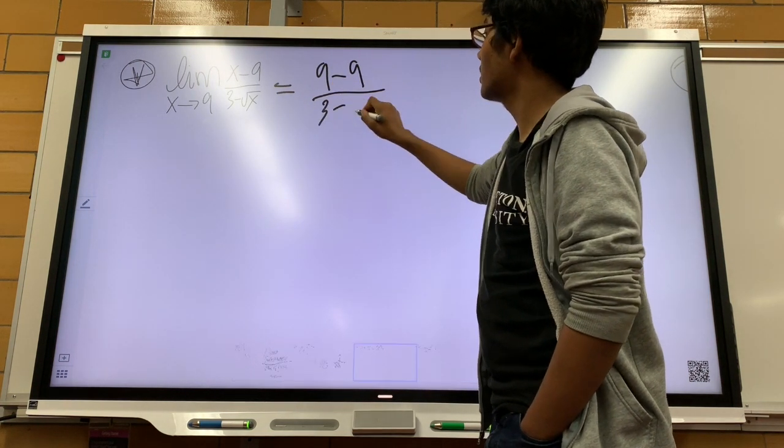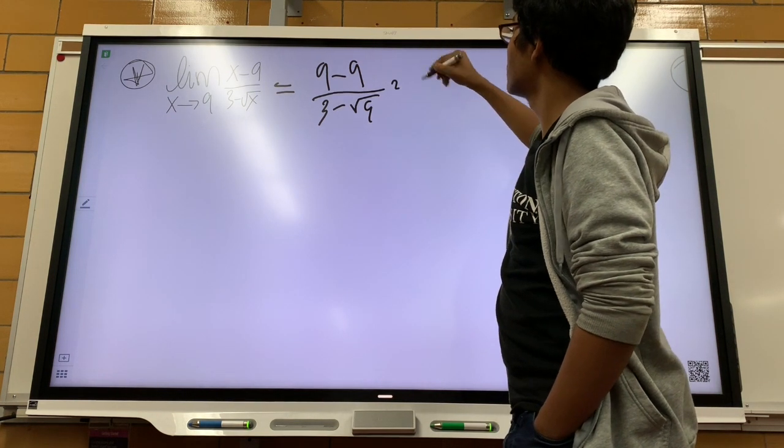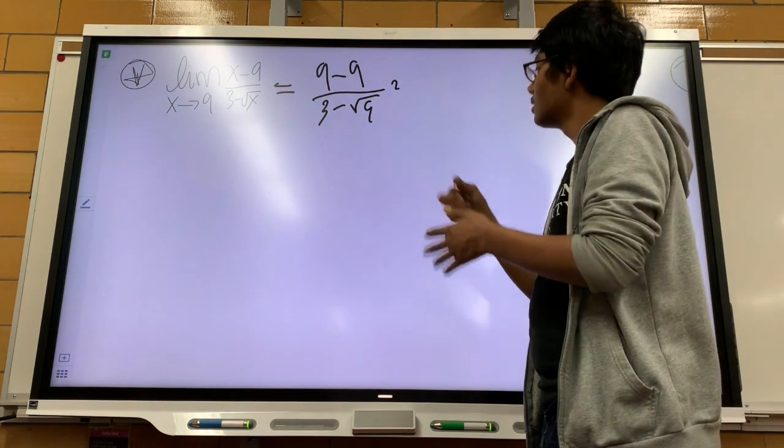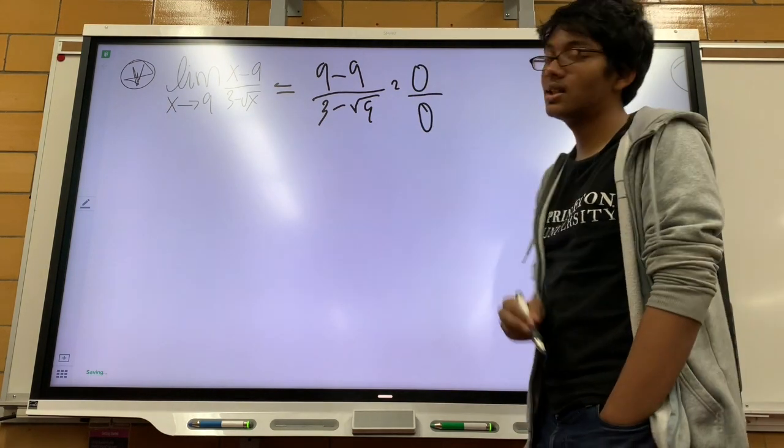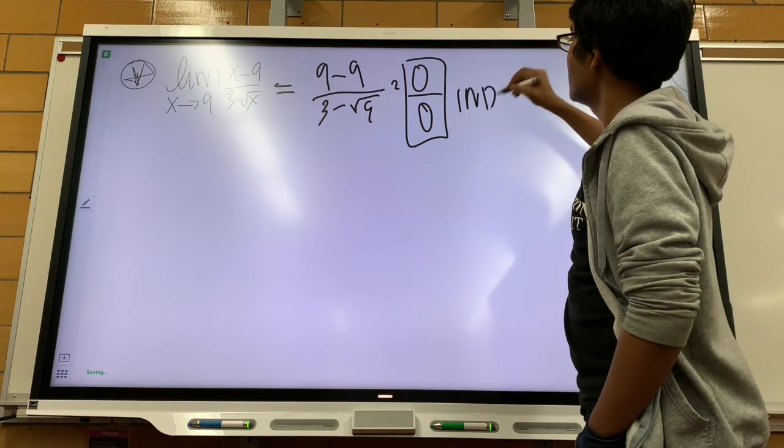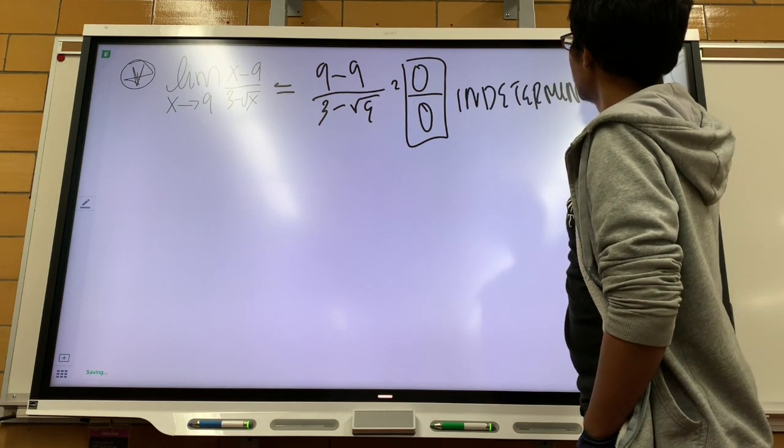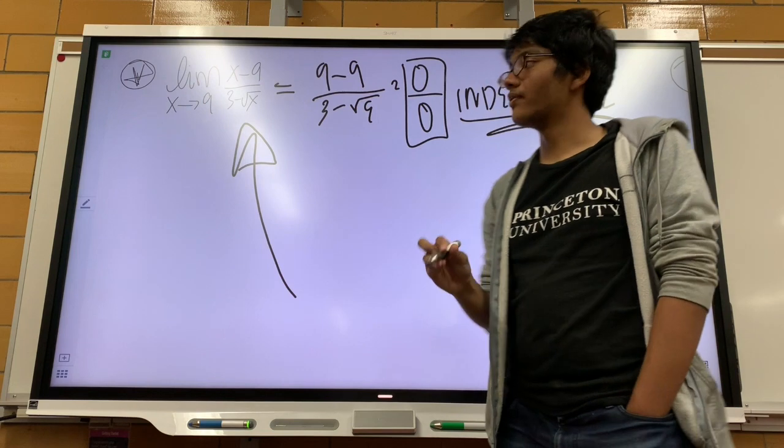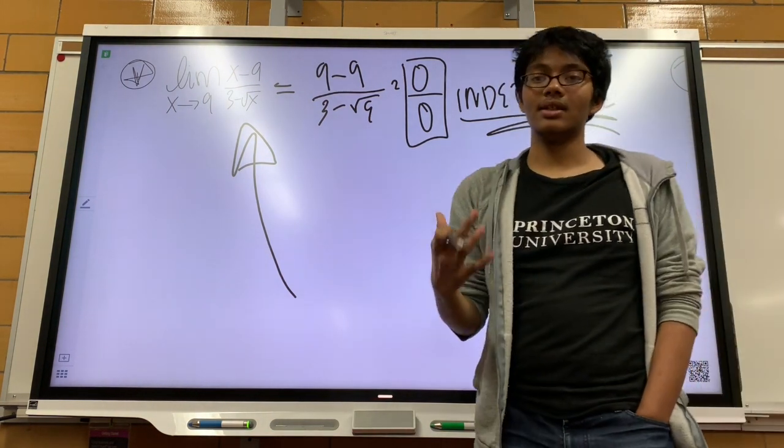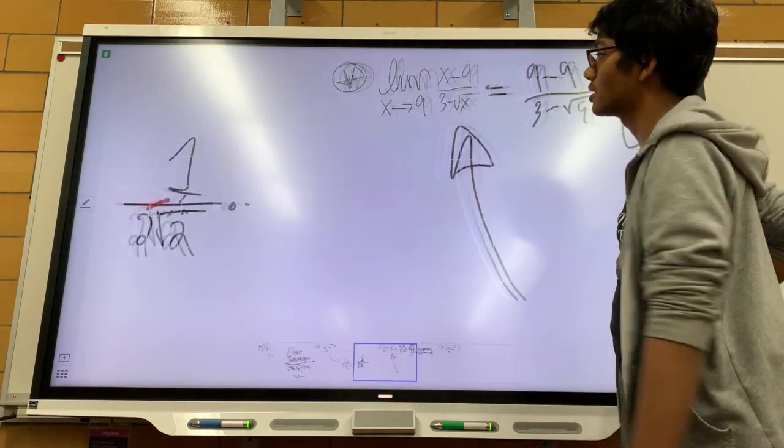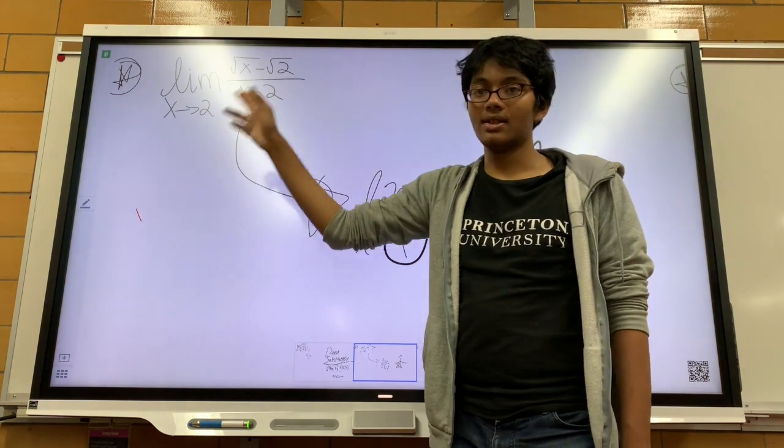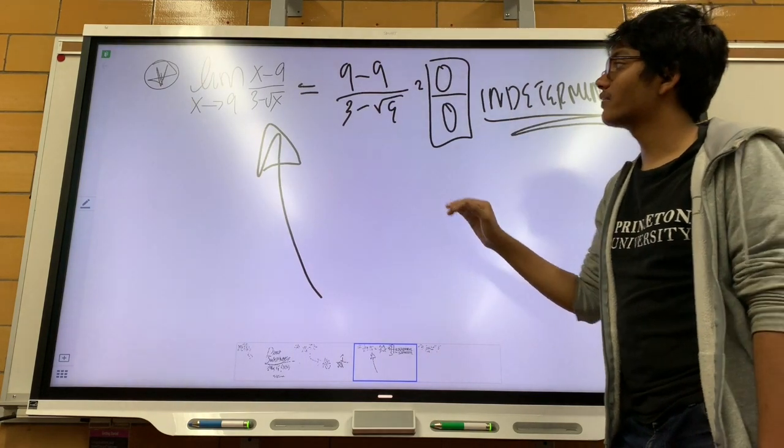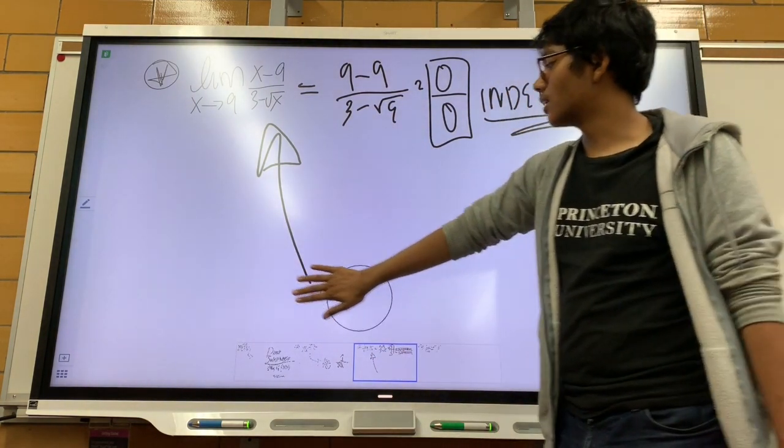And in the denominator, I get 3 minus the square root of 9. And that becomes 0 in the top over 0 in the denominator. This is an indeterminate form, meaning that we can actually simplify this function algebraically such that it does not become undefined at x equals 9. But how do we simplify it in that way? I'm going to try to use the same approach as before. Here, when I unsimplified the denominator into difference of perfect squares. We're going to try to apply the same thing over here. But instead of the denominator, let's do that to the numerator.